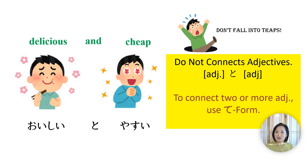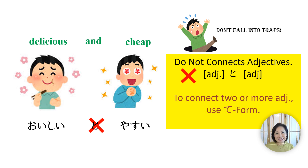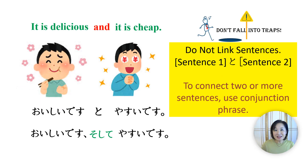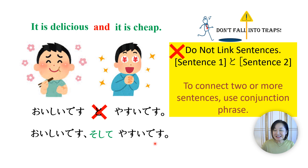The same rules apply to adjectives. For example, you can't say おいしいと安いです to mean 'delicious and cheap.' To connect verbs and adjectives in one sentence, you will need to learn a special verb conjugation called て形 (te-form). We'll cover て形 on this channel soon, but not in today's lesson. To link sentences, you use the conjunction そして, like おいしいです、そして安いです, which means 'it's delicious and it's cheap.'